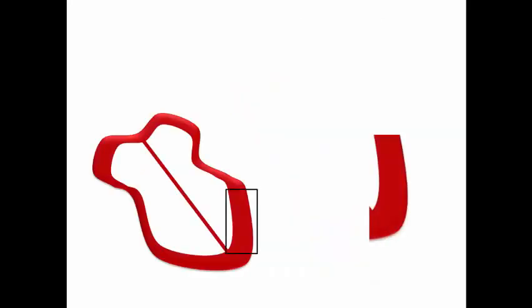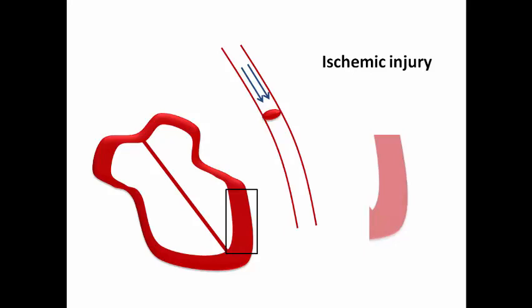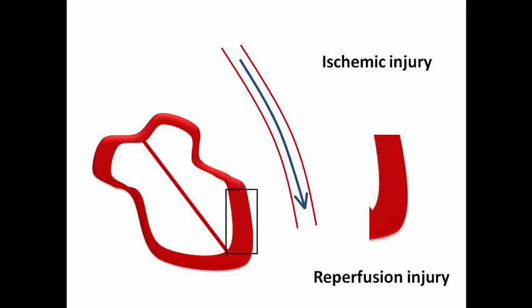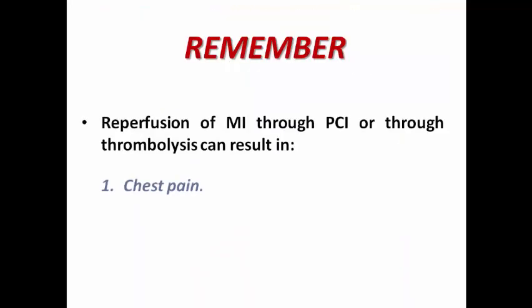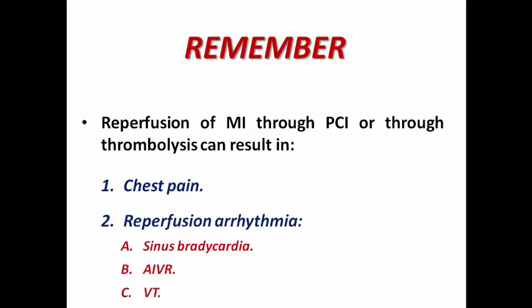Two pathological processes may occur in acute MI. The first is ischemic injury where a blood clot interrupts blood flow, and after restoration via angioplasty or thrombolytic therapy, reperfusion injury can occur. Both types can result in VT during MI, so reperfusion injury can cause chest pain and reperfusion arrhythmias. The most common reperfusion arrhythmia is sinus bradycardia or AIVR, which is the most specific type, but VT may also occur during the reperfusion phase.